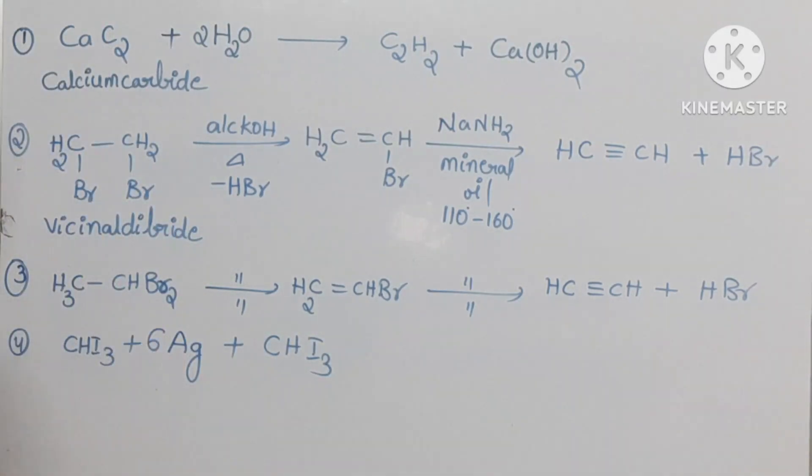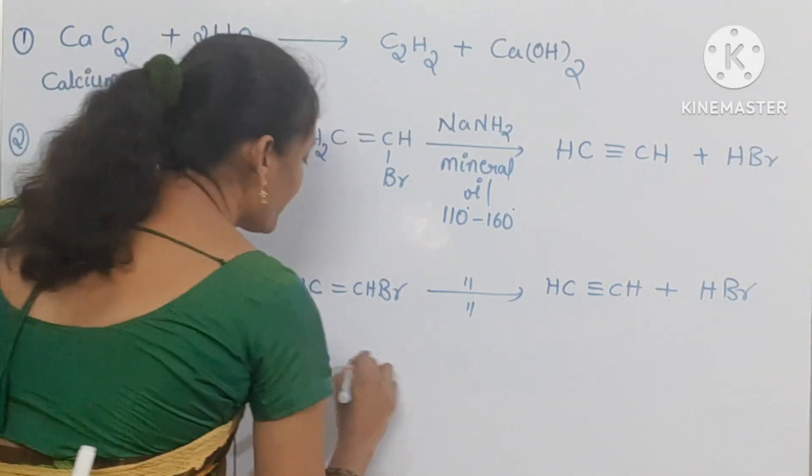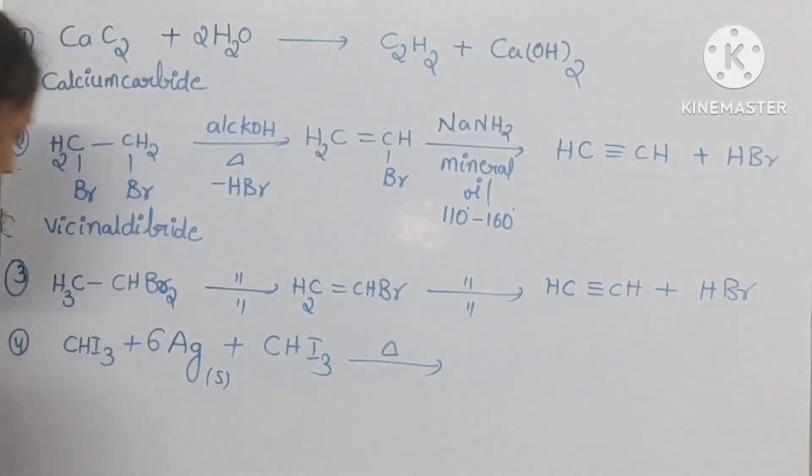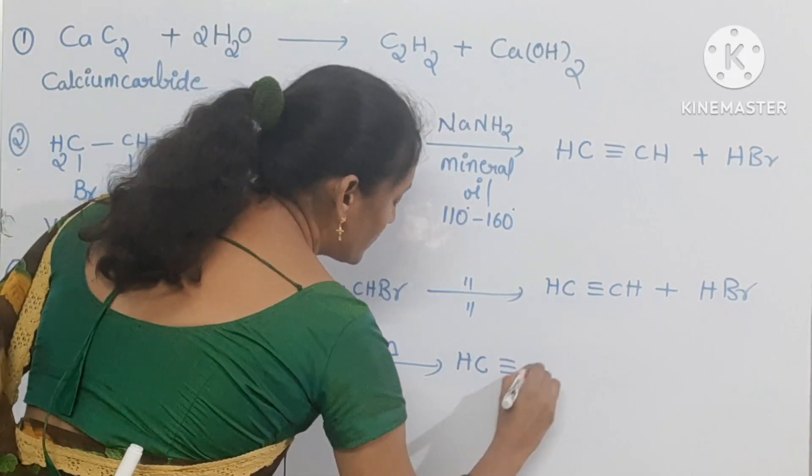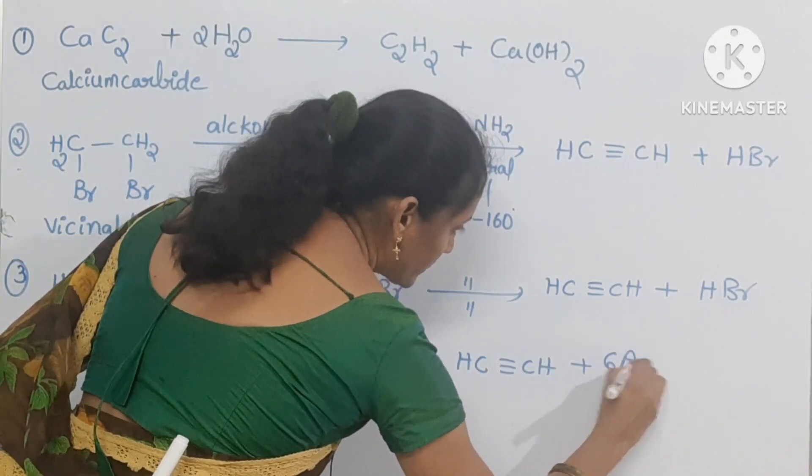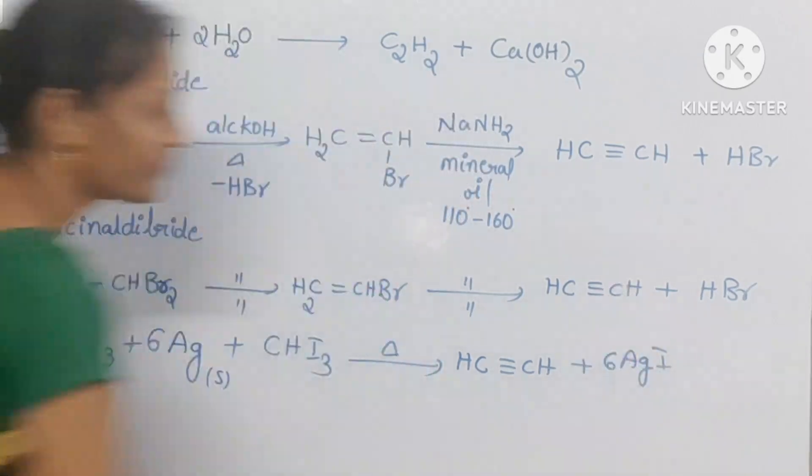Here heating is necessary. Then it will give you CH triple bond CH and the remaining one is six moles of silver iodide.